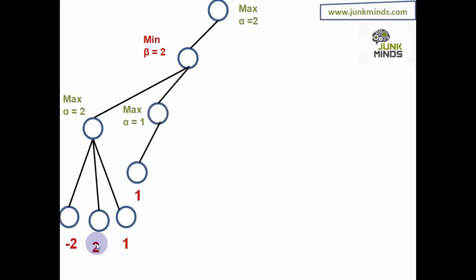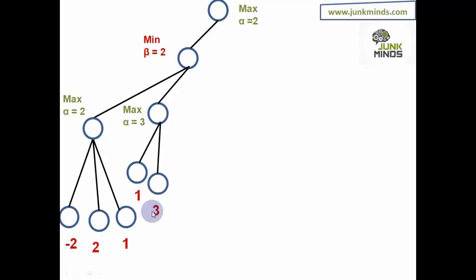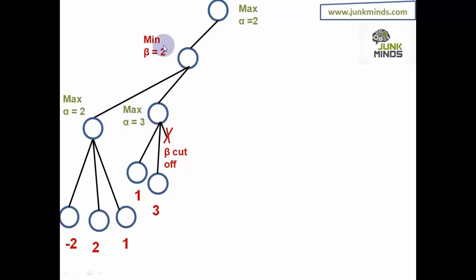Going to the next path: I get a max value of 1 for the first child. I need to decide whether to evaluate this path further. I check: is max greater than beta? Max is 1, beta is 2 — no, it's not, so I go ahead and evaluate further. I get the next value of 3, which is greater than 1, so the max is now 3. I check again: is max greater than beta? Max is 3, beta is 2 — yes, max is greater than beta. This means there is no possibility of getting a better path from this node, so I don't evaluate the child nodes further. Since the comparison was max greater than beta, this is a beta cutoff.